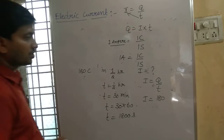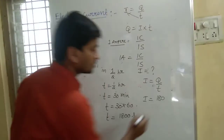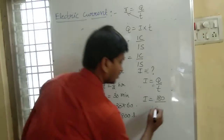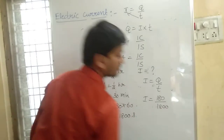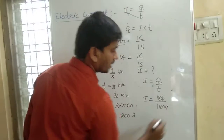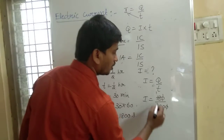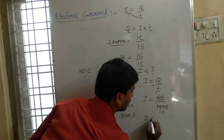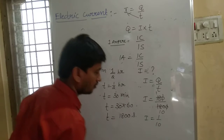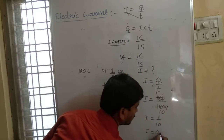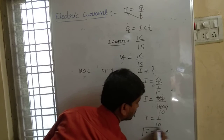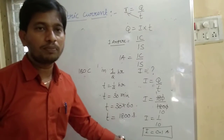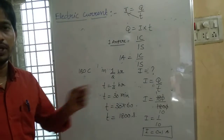So Q equals 180 Coulombs and T equals 1800 seconds. The zeros cancel, giving 18 divided by 180, which simplifies to I equal to 1 by 10, or 0.1 Ampere. So the current flowing through that conductor is 0.1 Amperes.